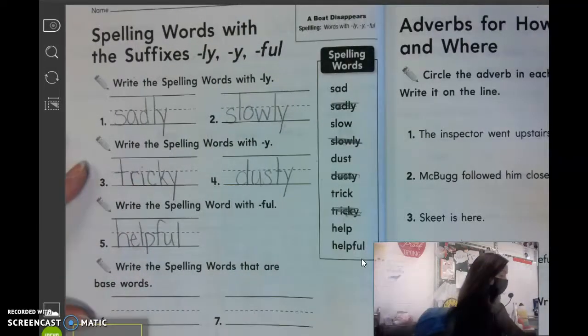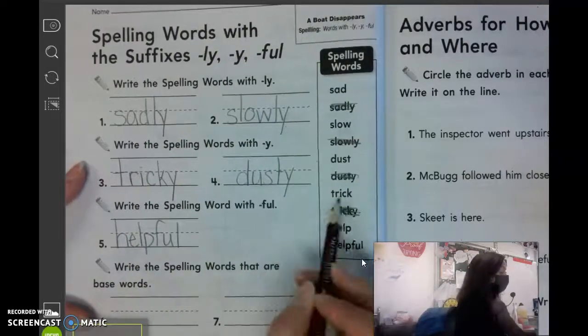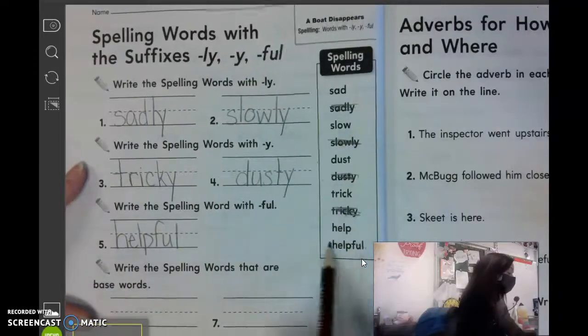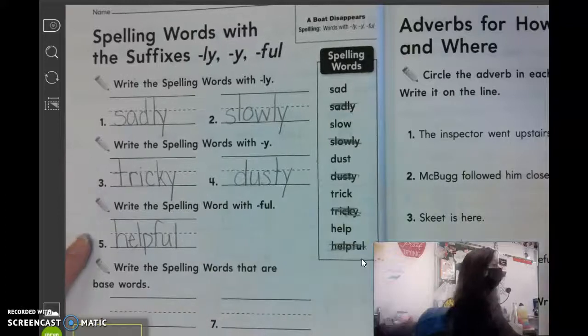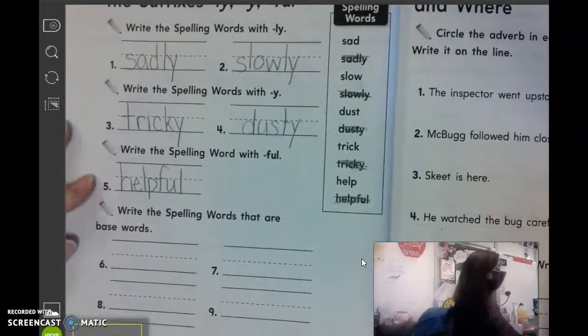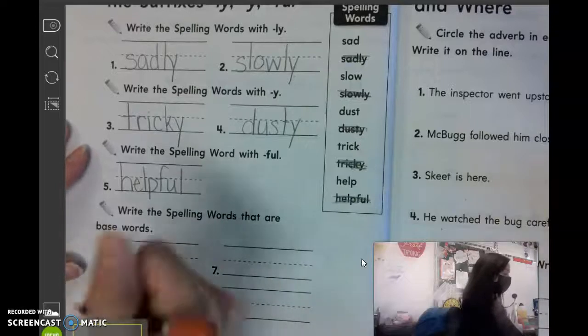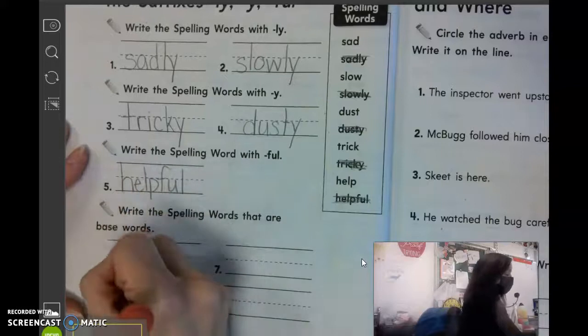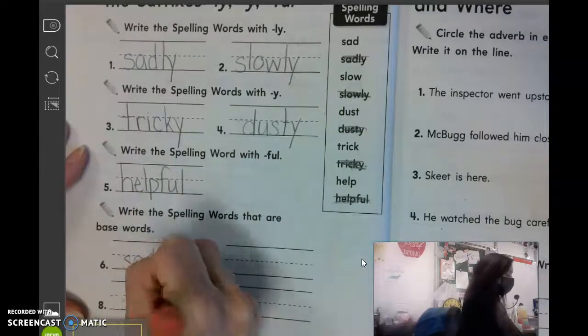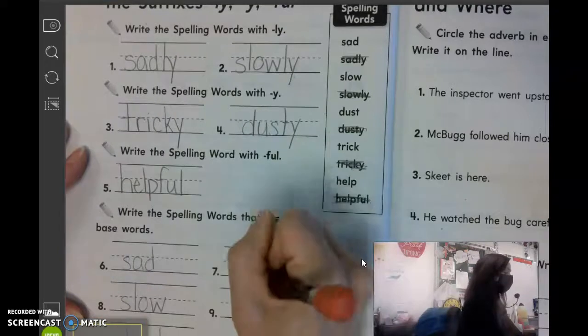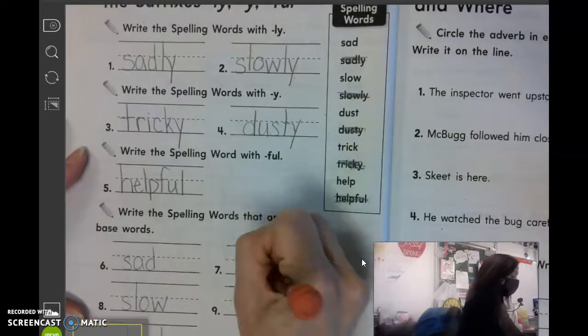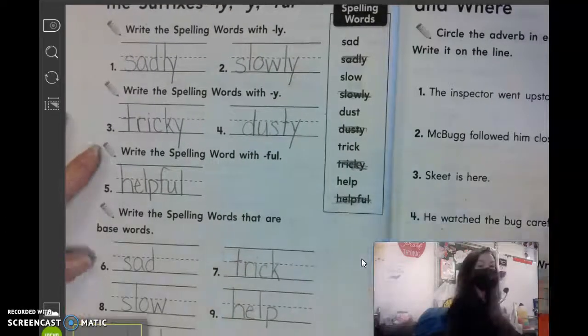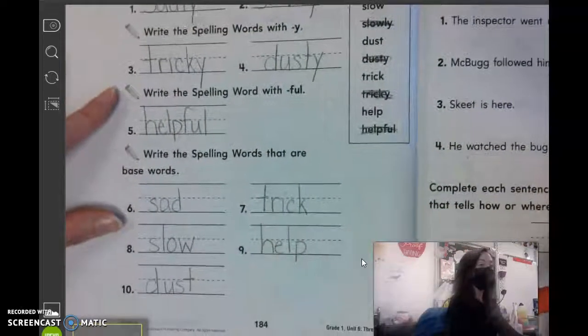And then the last five words are the base words, which means they don't have an L-Y, a Y or F-U-L, or a suffix. So what are those five words? Jordan? Good. Sad? Dust? Trick? And help. Good job. All right. So it's just the words without a suffix at the end.